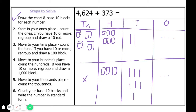Step two says to start in our ones place and count the ones. If we have ten or more, we are going to regroup. We count seven ones — seven is not more than ten, so we are not going to regroup. Our ones place is going to have seven. Moving to our tens place, we count nine tens. Nine is not ten or more, which means we cannot turn them into a hundred, so we have nine tens.